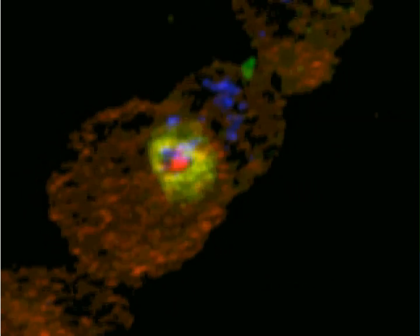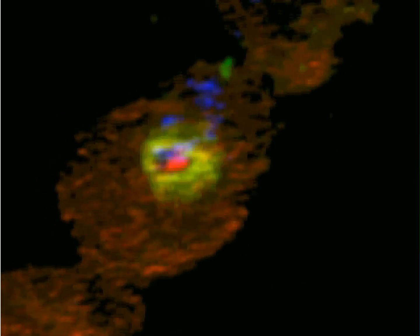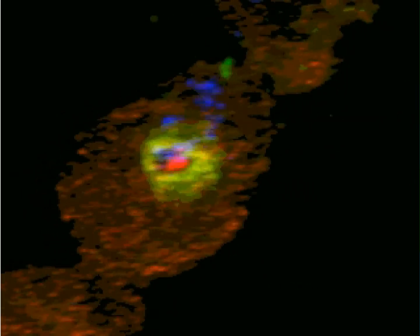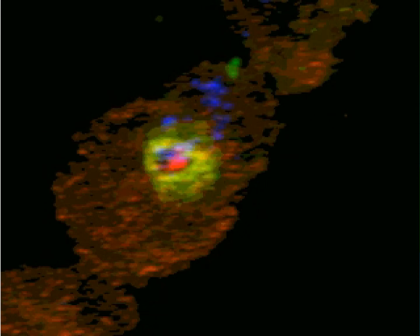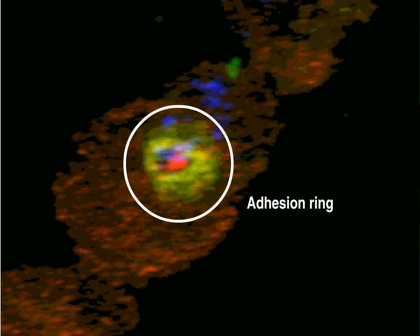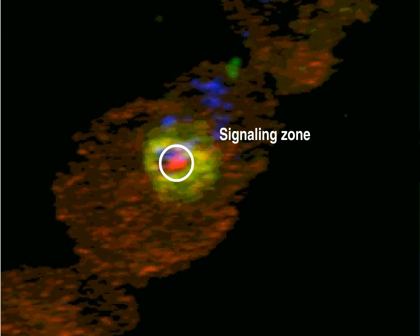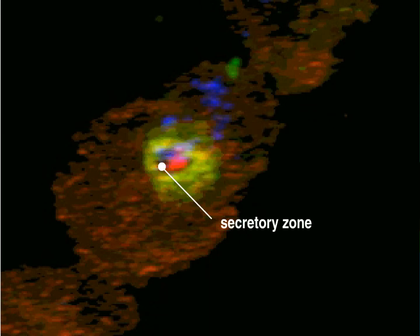If we look closely at the synapse, we can see its structure. The outer ring contains the adhesion molecule, and the inner ring is divided into two parts: one containing the signaling molecules, and the other, dark in this image, is the secretory zone.